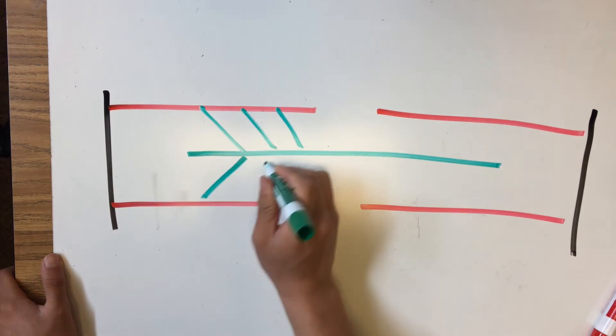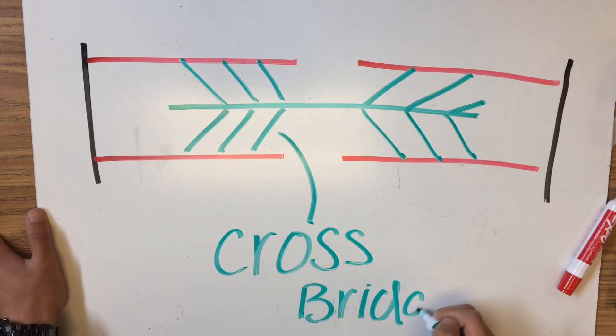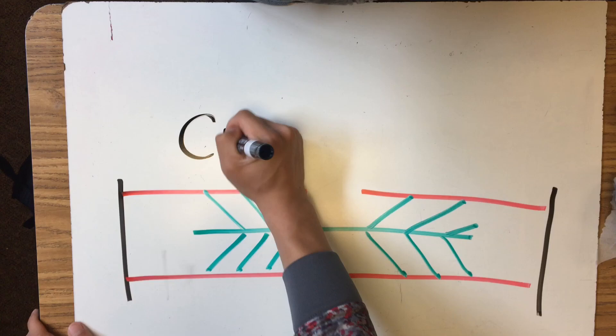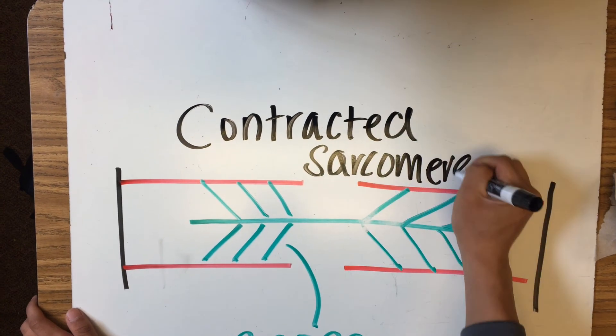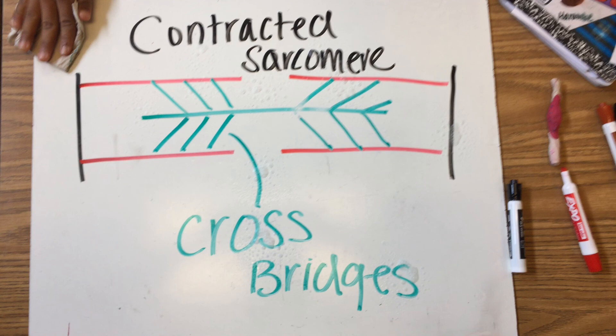This is a sarcomere when it is contracted. It has something called cross bridges. A cross bridge is when a myosin head is attached to the thin filaments. Now this happens because of a conformational change that is triggered in the myosin head which causes them to pull the thin filaments inward.